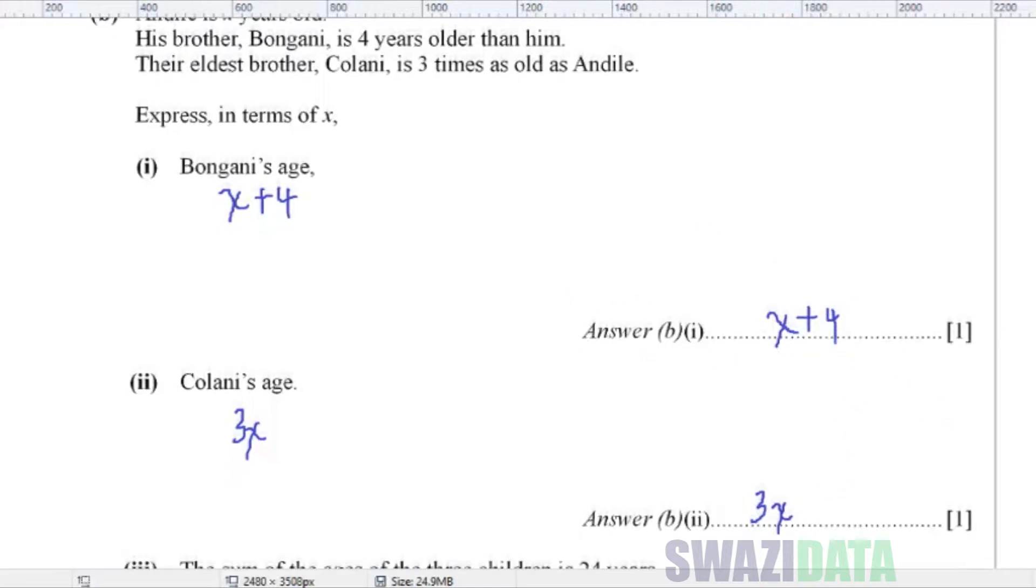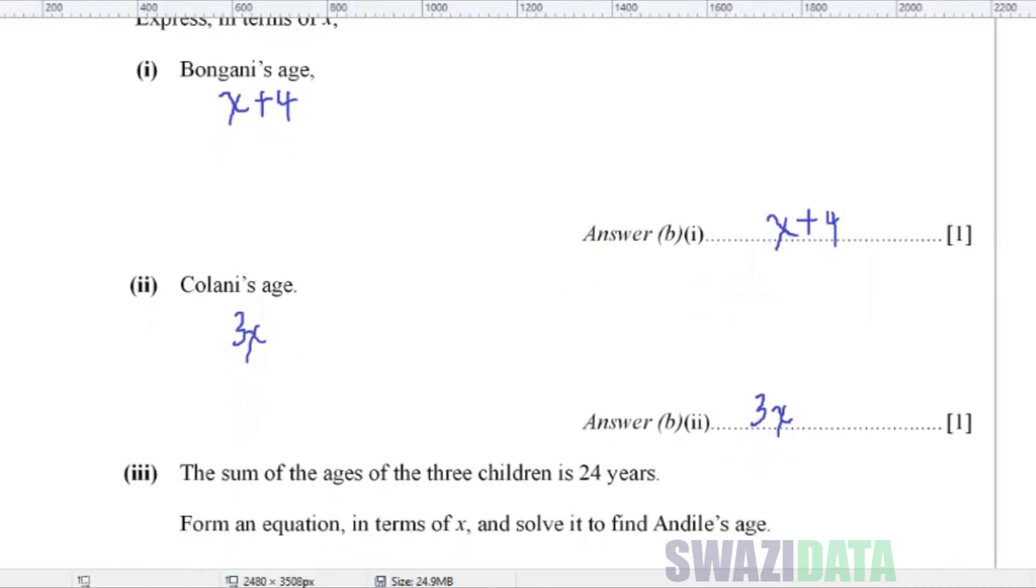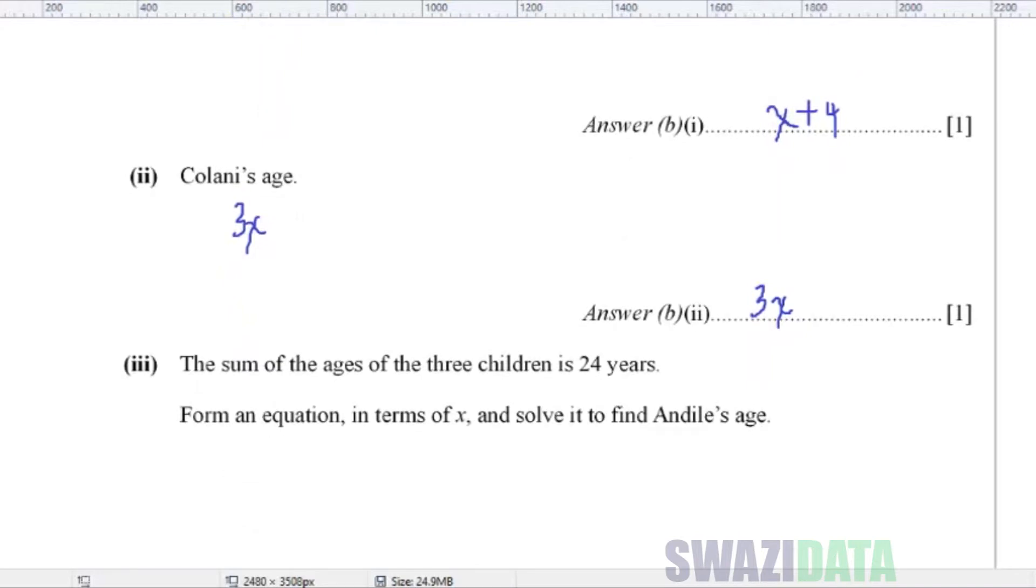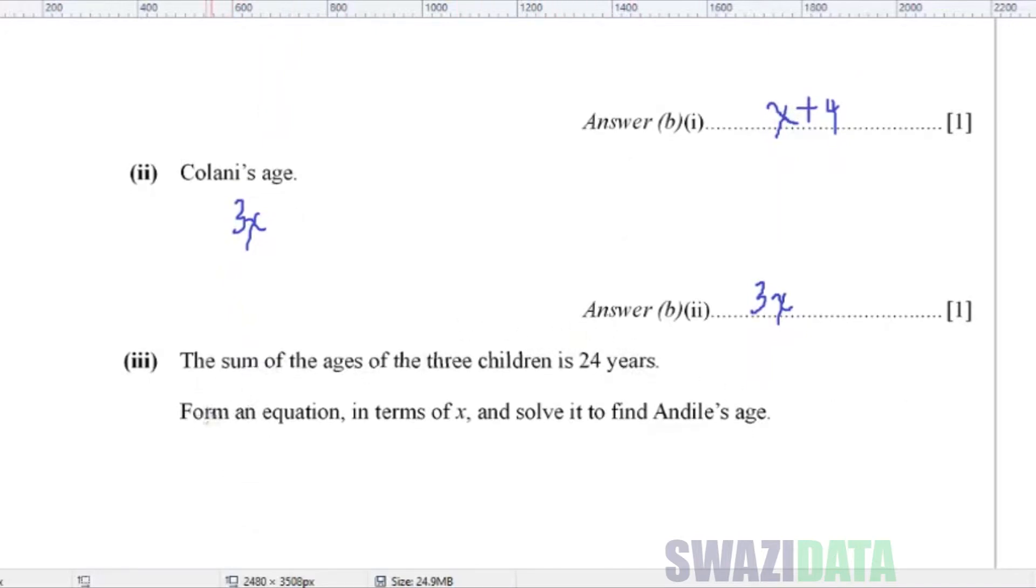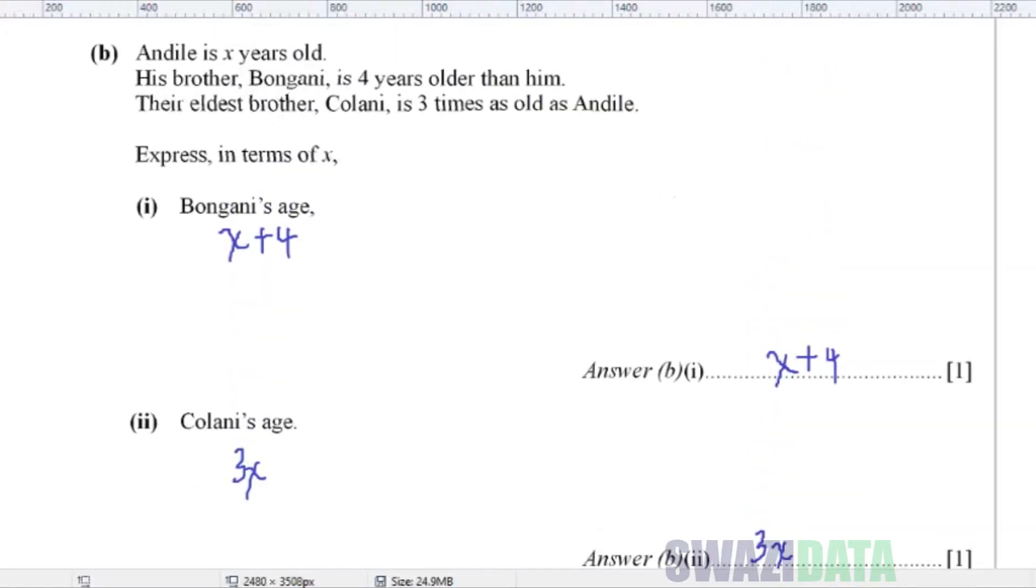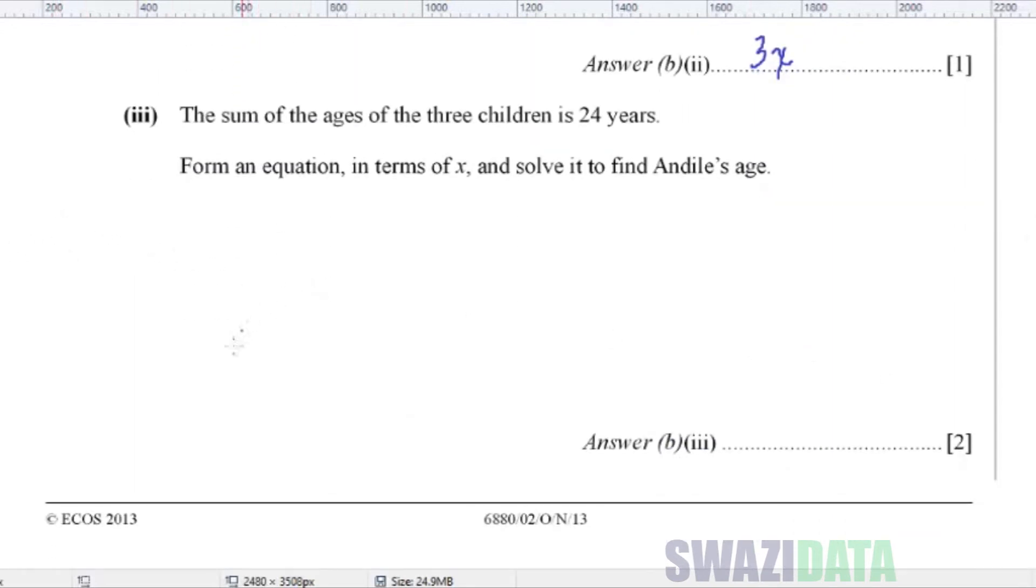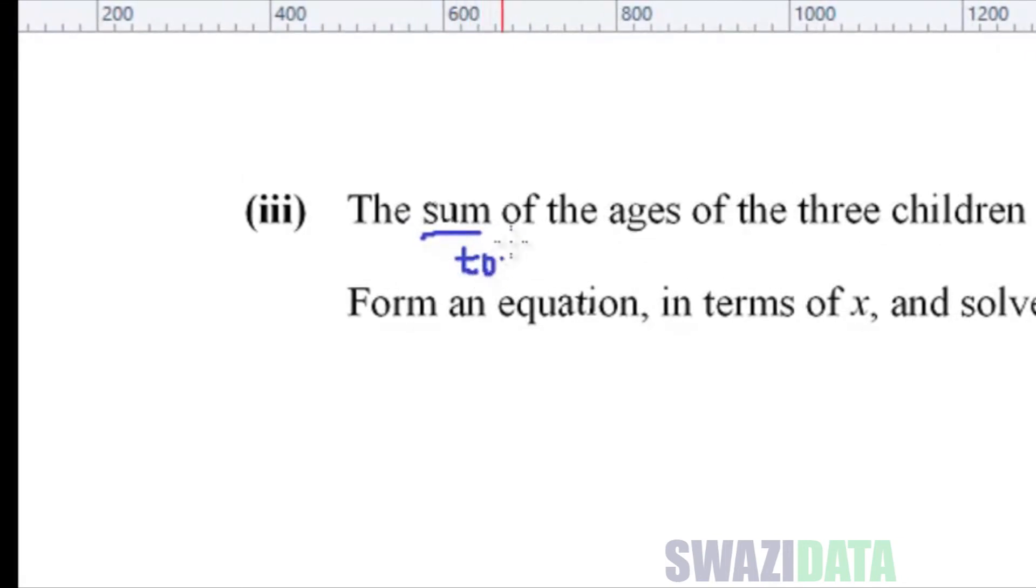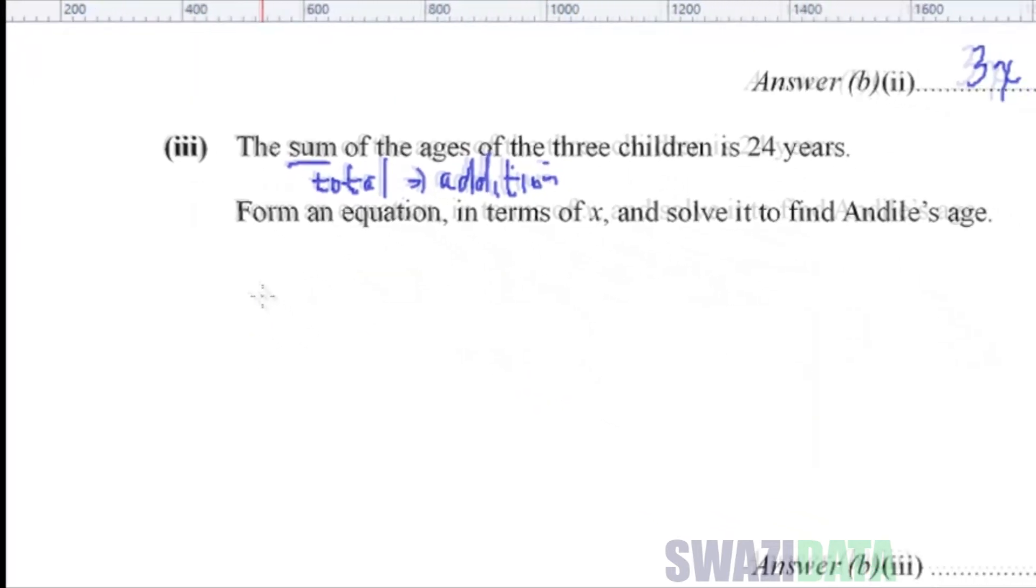Moving on to part 3, the sum of the ages of the three children is 24. Form an equation in terms of X and solve it to find Andile's age. We have Andile's age, which is X. Sum means the total, means total in terms of addition.